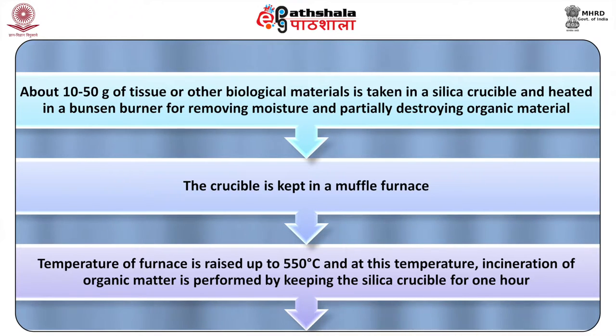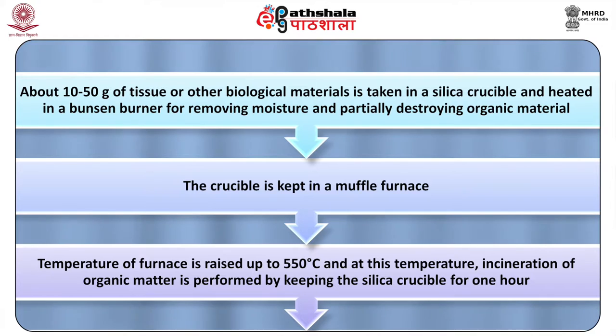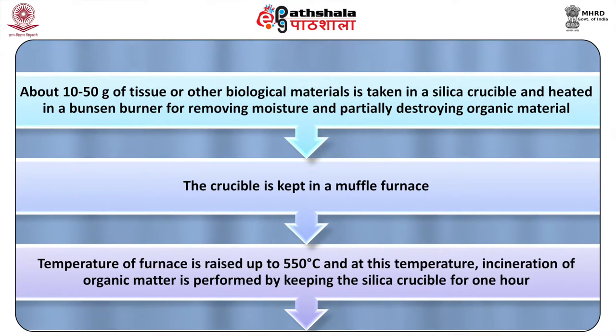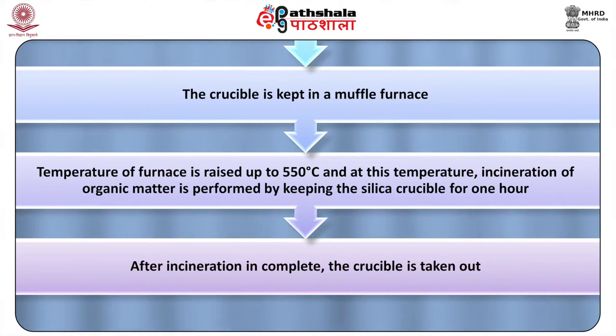In this process, about 10 to 50 grams of tissue or other biological material is taken in a silica crucible and heated in a Bunsen burner to remove moisture and partially destroy the organic material. The crucible is then kept in a muffle furnace, where the temperature is raised up to 550°C and incineration of the organic matter is performed for about an hour. After incineration, the colour of the residue is noted: in the presence of zinc the residue assumes a yellow colour, while in the presence of copper the colour is bluish-green. The residue is boiled with 10 mL of 4N hydrochloric acid and then filtered.